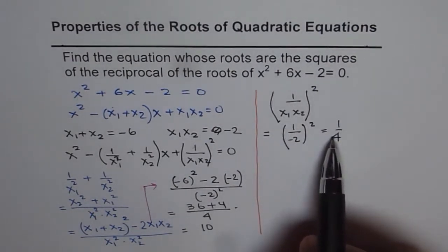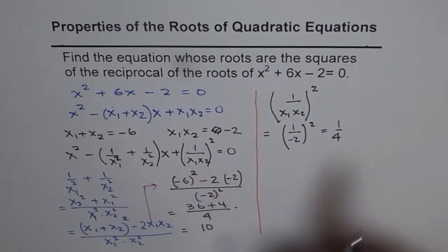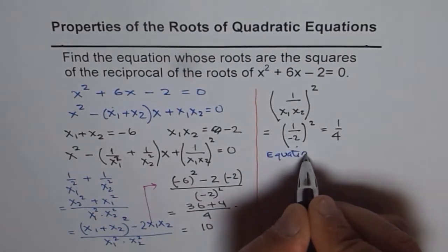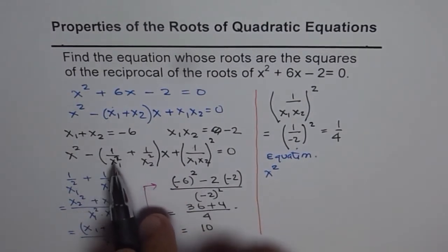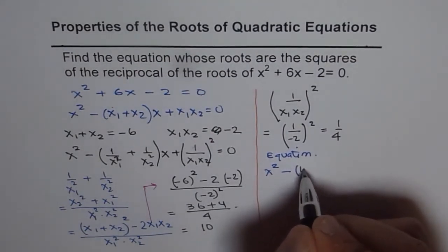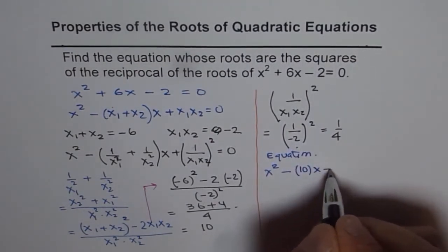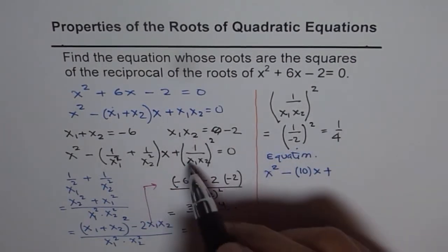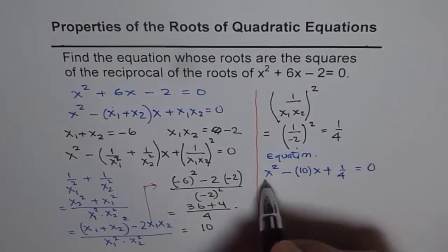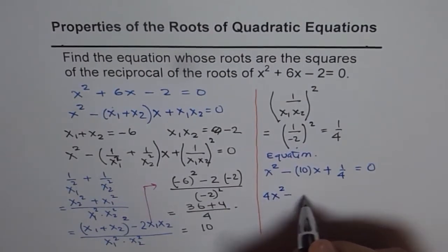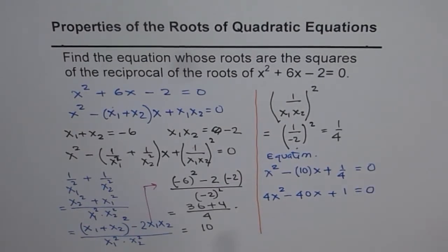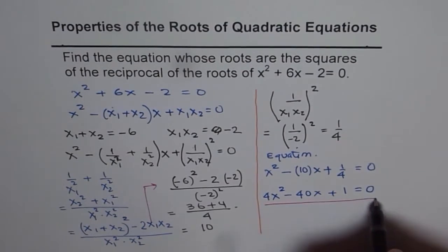Since we know both sum and product, we can substitute these values and get our equation. The equation is x² - (sum of roots)x + (product) = 0, giving x² - 10x + 1/4 = 0. Multiplying through by 4, we get 4x² - 40x + 1 = 0. So that is our answer.